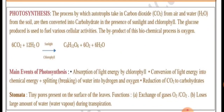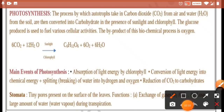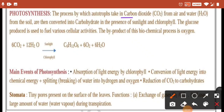Photosynthesis is the process by which plants make their food. It is the process by which autotrophs take in carbon dioxide from the air and water from the soil, converting them into carbohydrates in the presence of sunlight and chlorophyll.